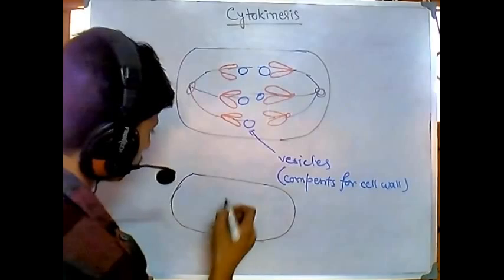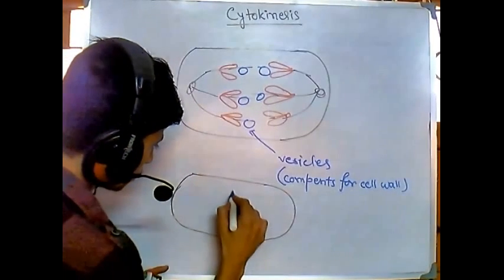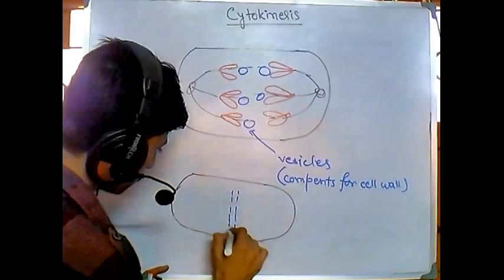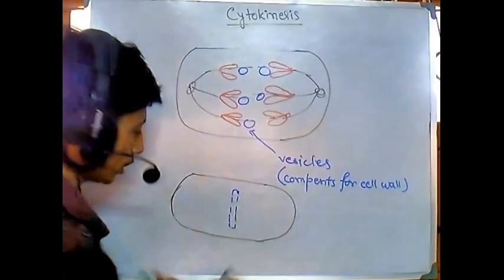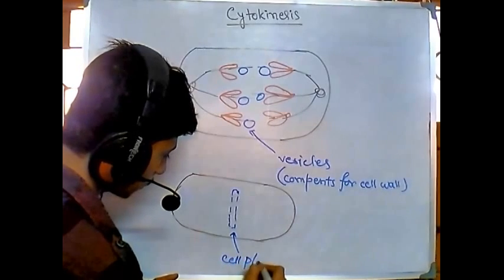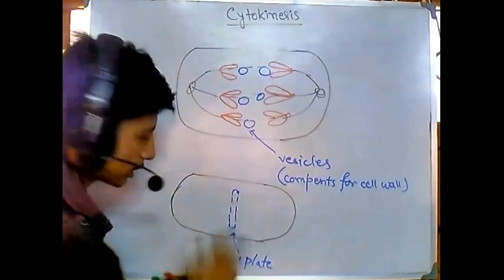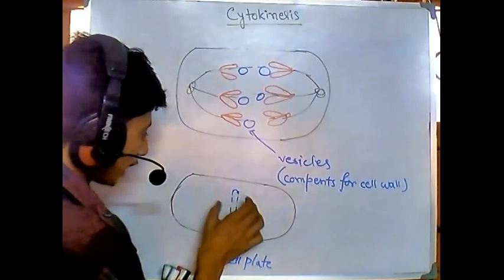They start to fuse. As they start to fuse here, they start to deposit those materials, starchy materials, in between in a membrane-coated way. This deposition is called the cell plate in plant cell. The cell plate is the very beginning of cell wall formation. It is just like a septum at the middle, not even spread towards the end and terminal of the cell.